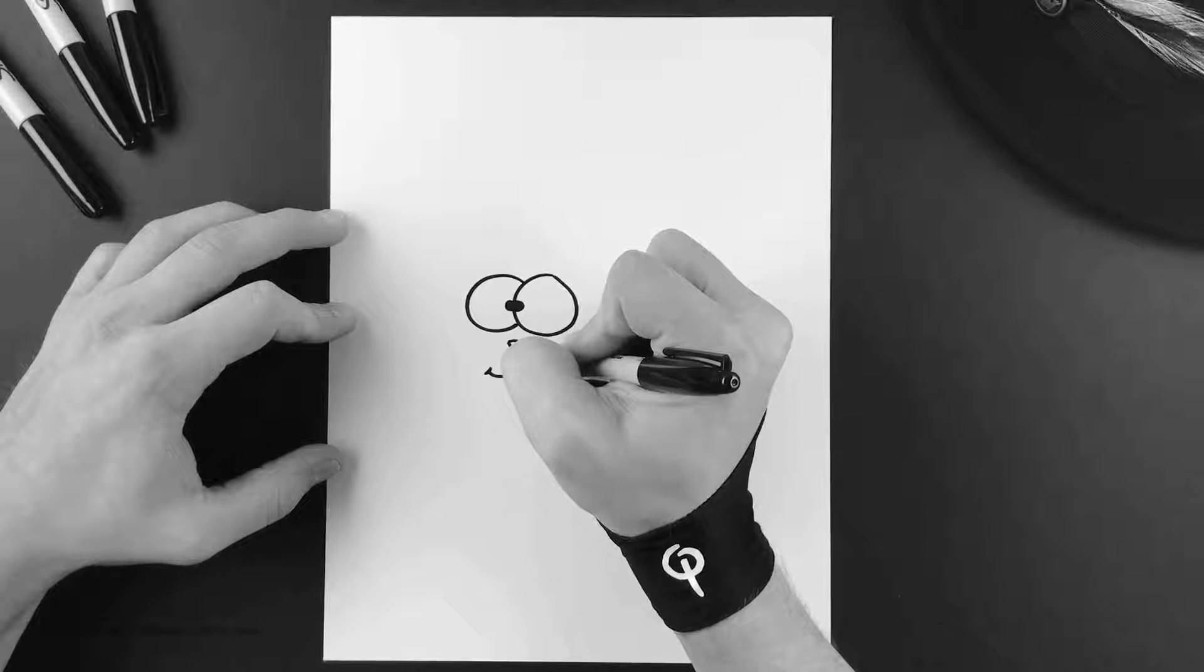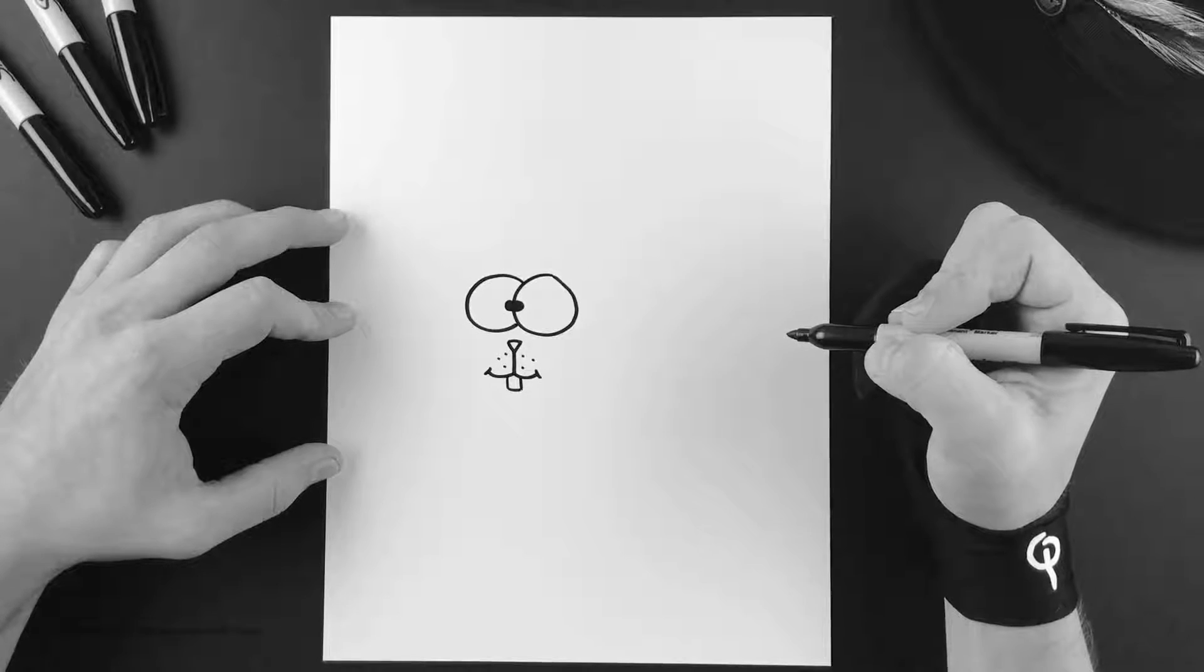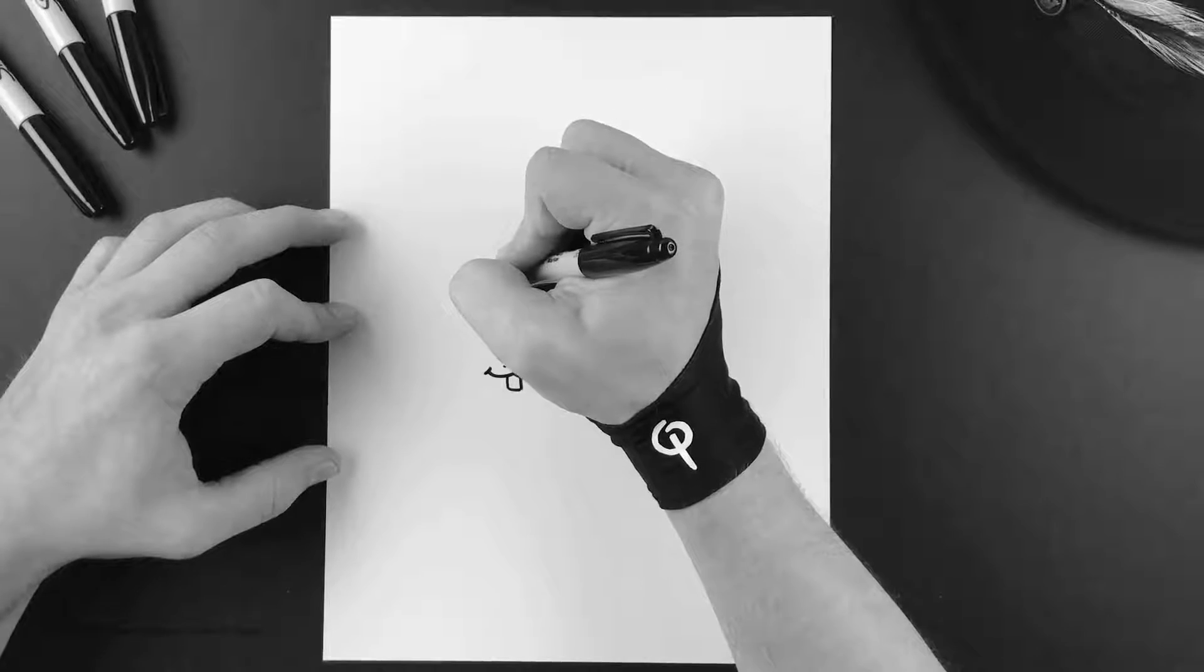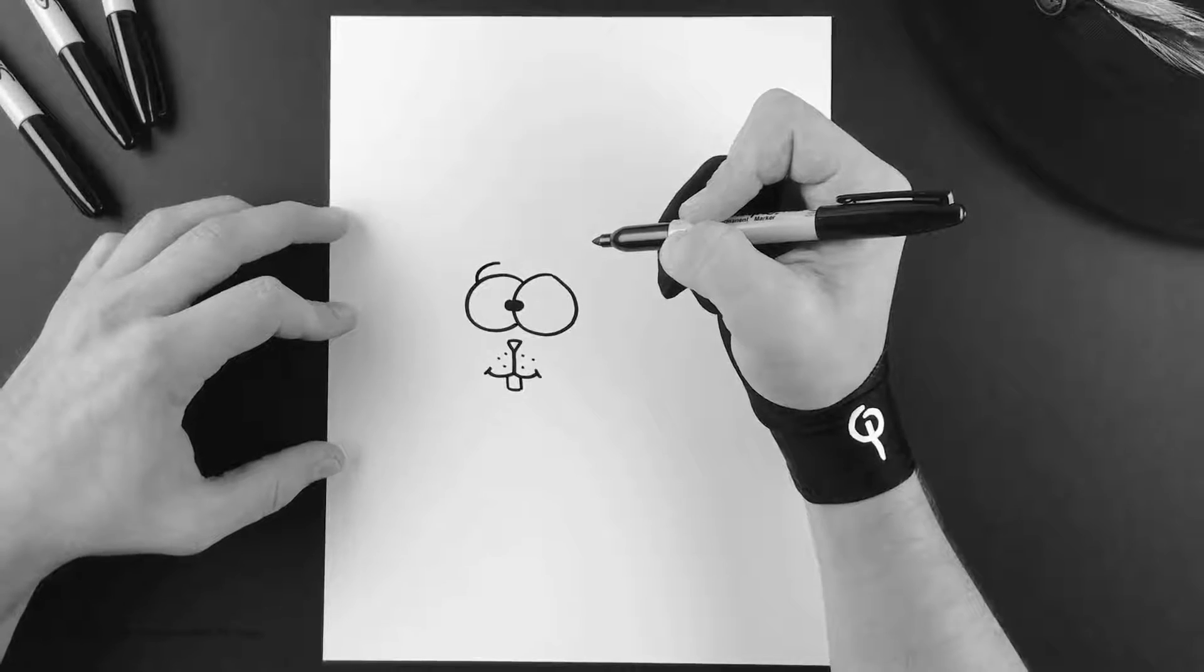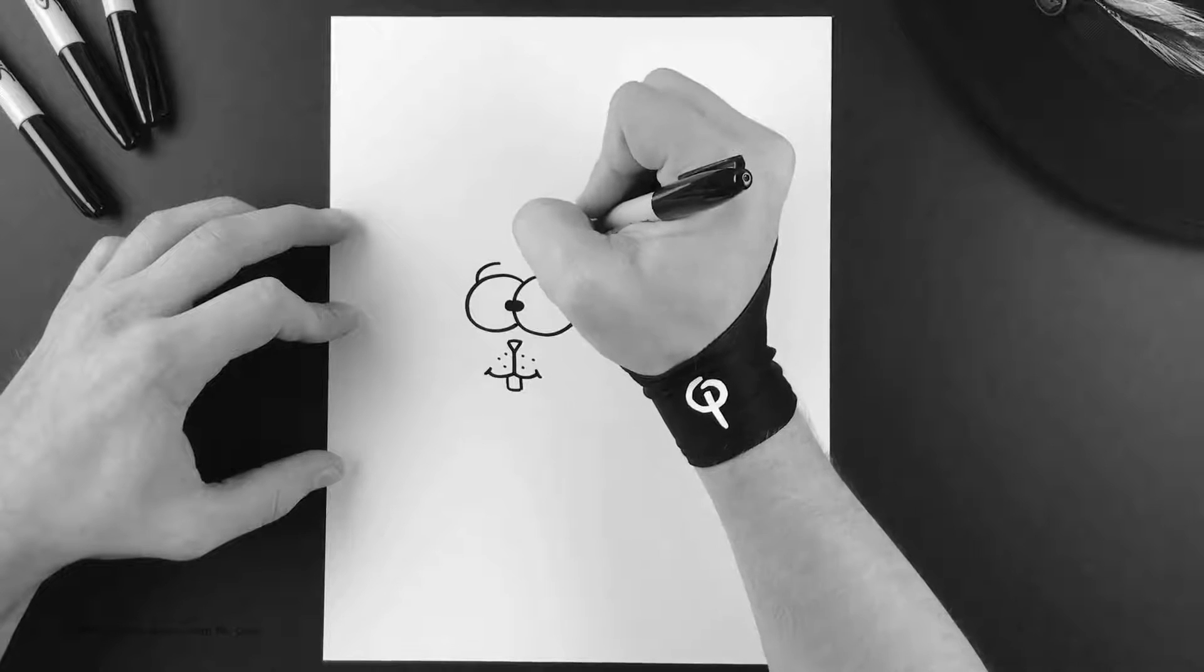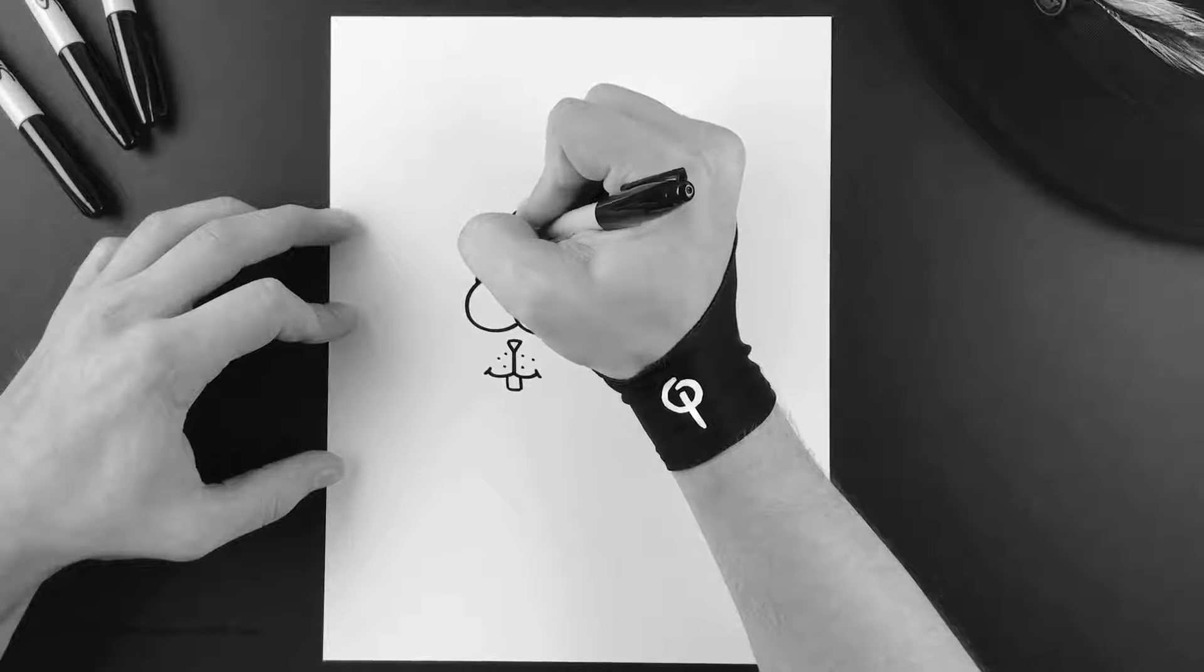And then let's go ahead and add three little dots for where his whiskers go. Now off the left eye we're gonna add a little bit of an eyelid, and then between his two eyes we're gonna do two little pieces of fur.